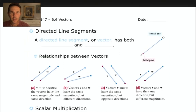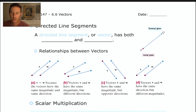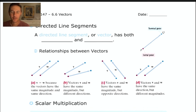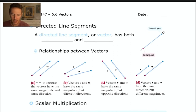Taking it from the top: vectors are directed line segments. I'm going to try to move through this segment fairly quickly — it's still about six or seven pages of notes — but it's not a super complicated topic. A directed line segment, or a vector, has both magnitude and direction.